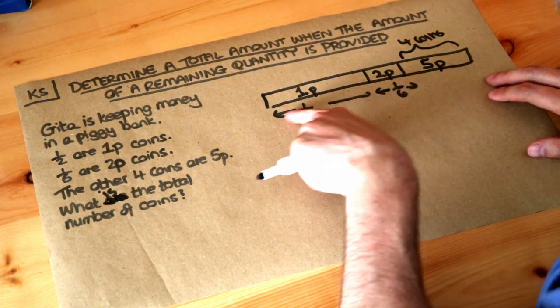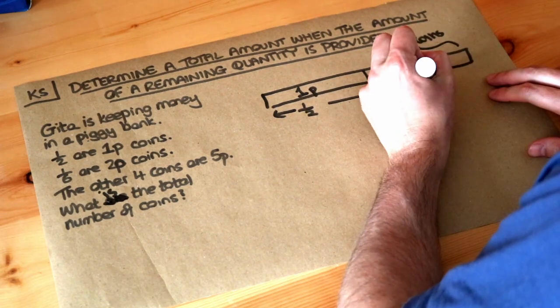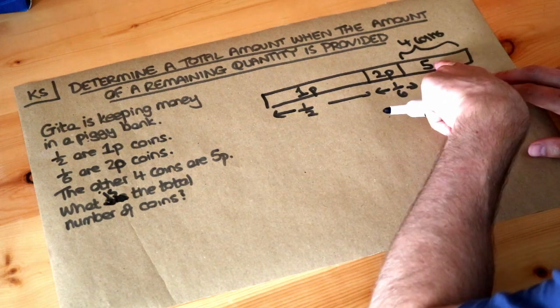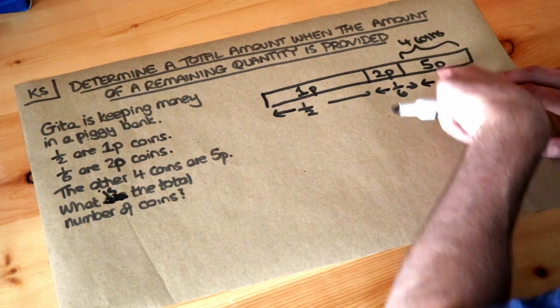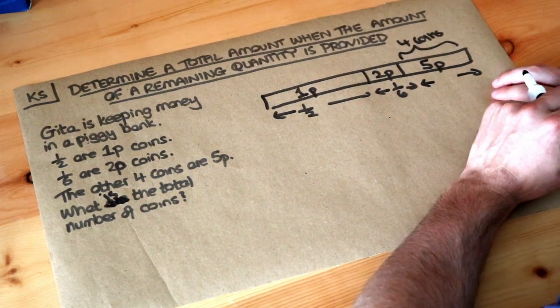Now if we think about it, we know the total fraction of coins are 1p or 2p and therefore we find the remaining fraction here. We know what fraction the coins are 5p and we can say that fraction of the coins is the four coins, and from that we can work out the total number of coins.